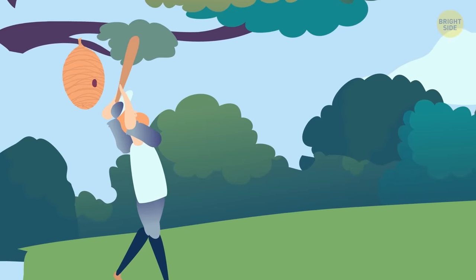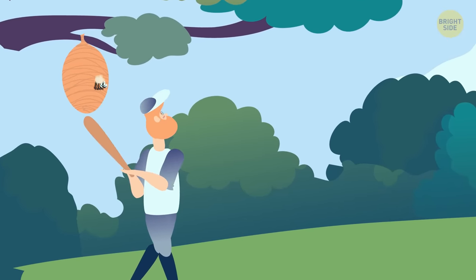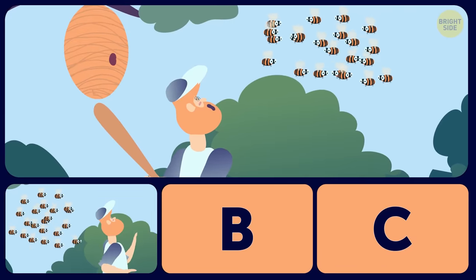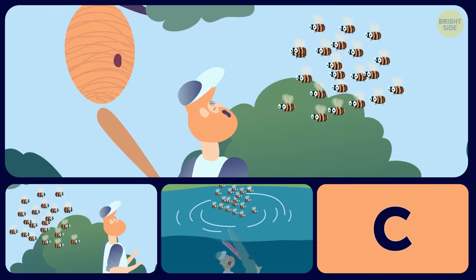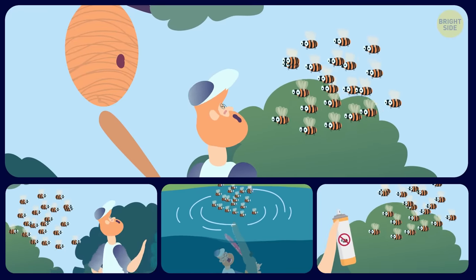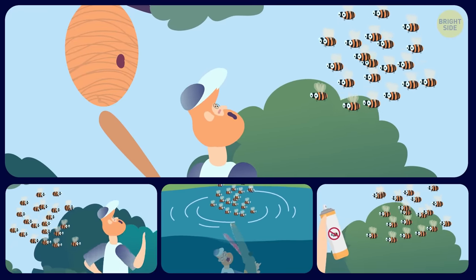6. If you accidentally disturbed a swarm of bees and they were coming after you, you would A. Run away as fast as you can B. Dive into a pool, lake, or a river C. Pull out some bug spray and use it on the bees.